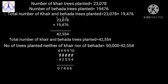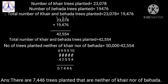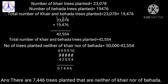You know how to do the borrowing, so I am not going to explain that now. We write the answer in words: there are 7,446 trees planted that are neither of Kher nor of Behera. Hope you have understood this sum. We have finished sum number 1.